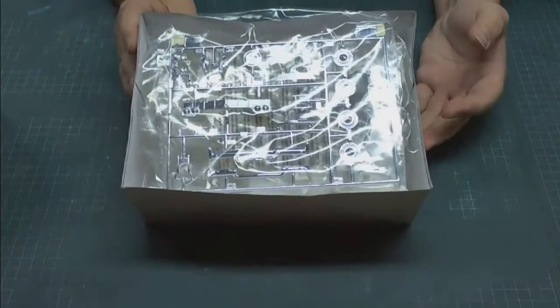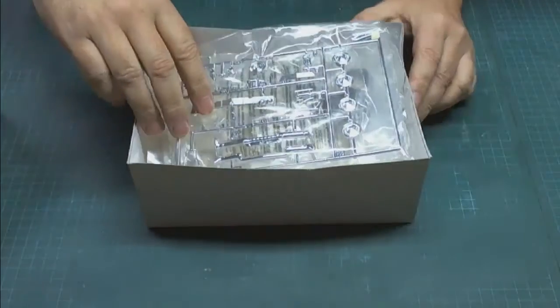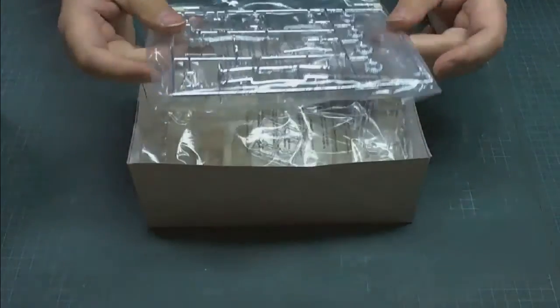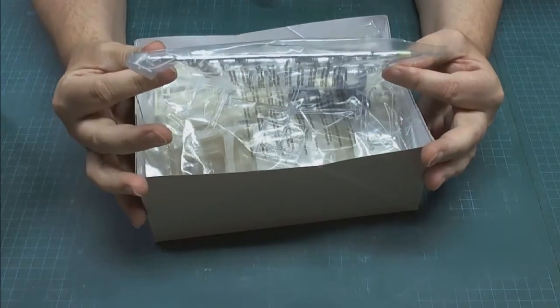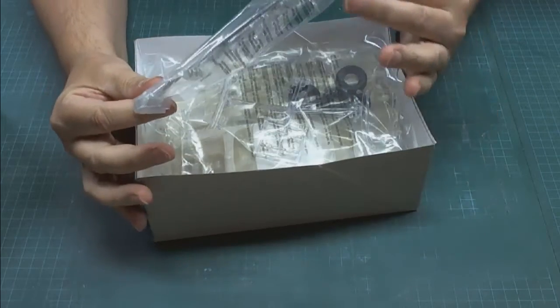Inside, the usual suspects. We've got some chrome parts, which would be the front grille, the hubcaps, a few other things, the rear light bezels as well.